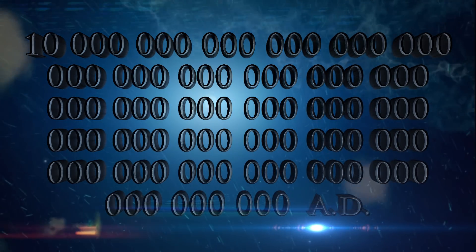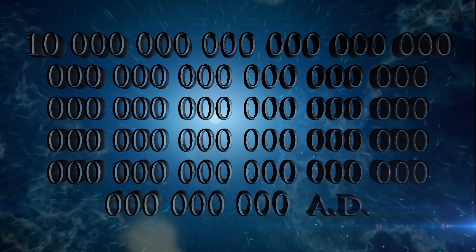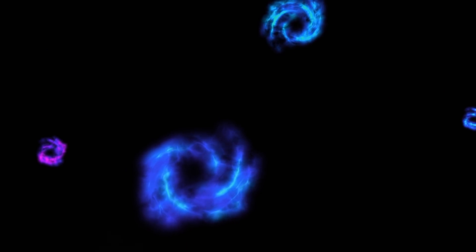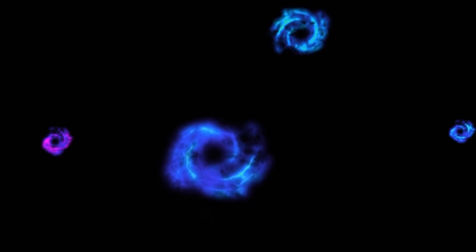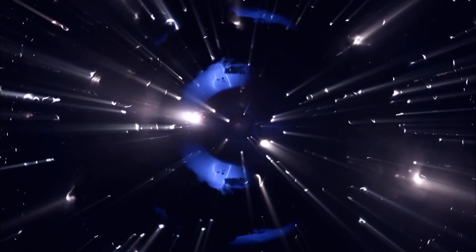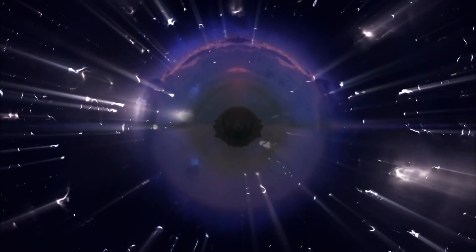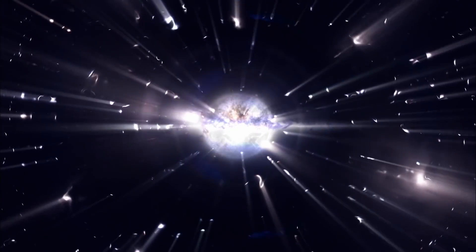One googolplex years from now, the year is 10 followed by 100 zeros. Estimated time until a supermassive black hole with a mass of 20 trillion solar masses decays by the Hawking process. This marks the end of the black hole era.